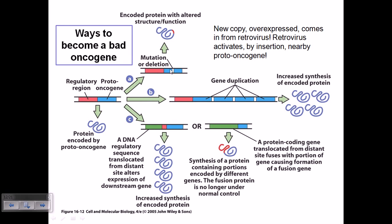Welcome again. We have talked about how a cancer cell is produced from a normal cell — it's a journey from a normal cell towards the cancer cell via a step-by-step process through mutations that are occurred in three different types of genes: one is the growth regulatory genes, second one is the apoptotic genes, and the third one is the tumor suppressor genes.